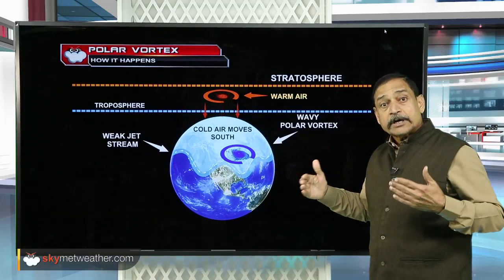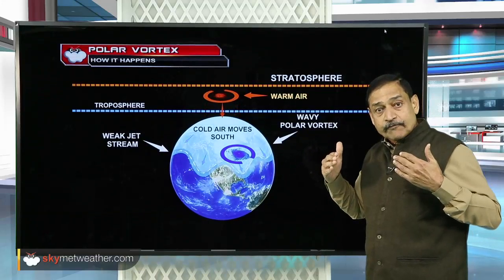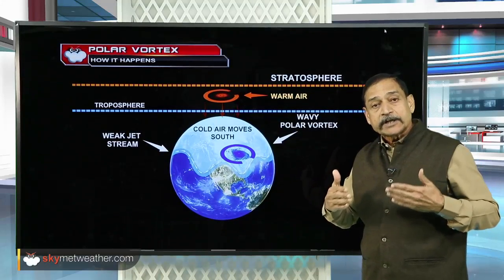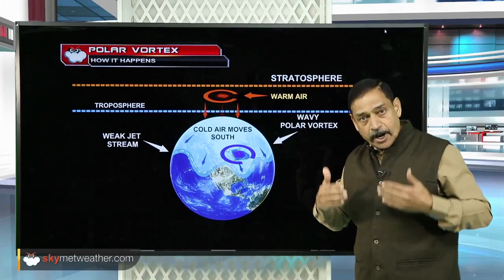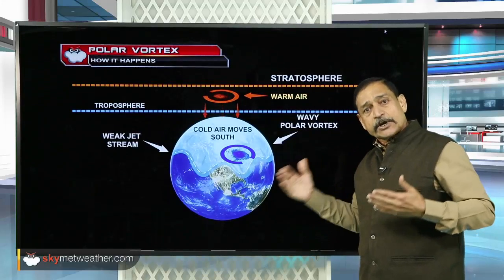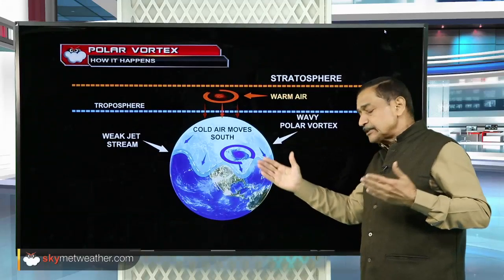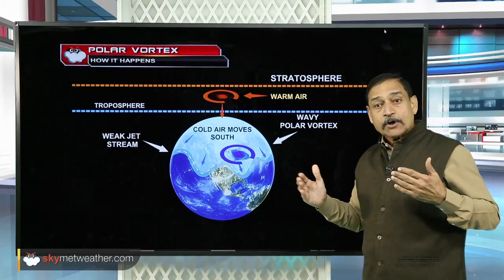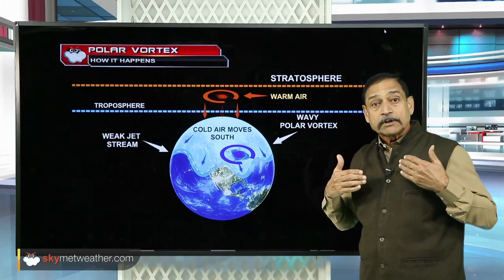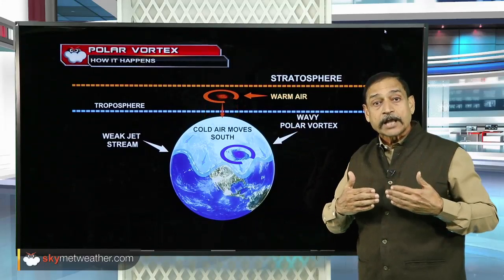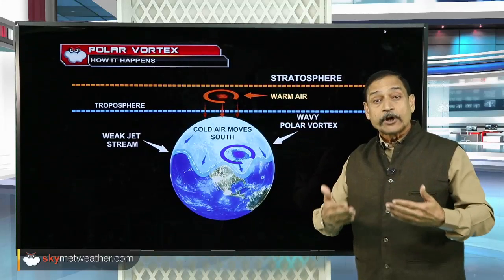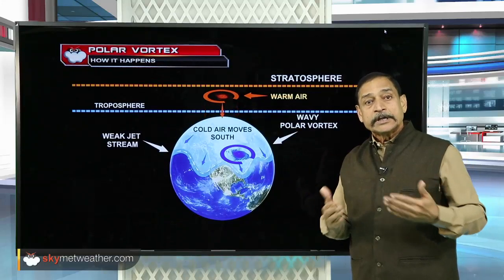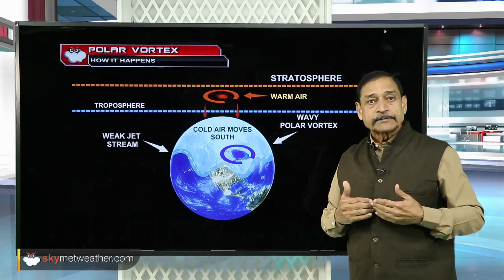The very cold conditions being experienced over the Indian subcontinent nowadays are an offshoot of this polar vortex. It travels around the globe and takes almost a week to 10 days, or at times even beyond that, to complete its journey before it finally diminishes.